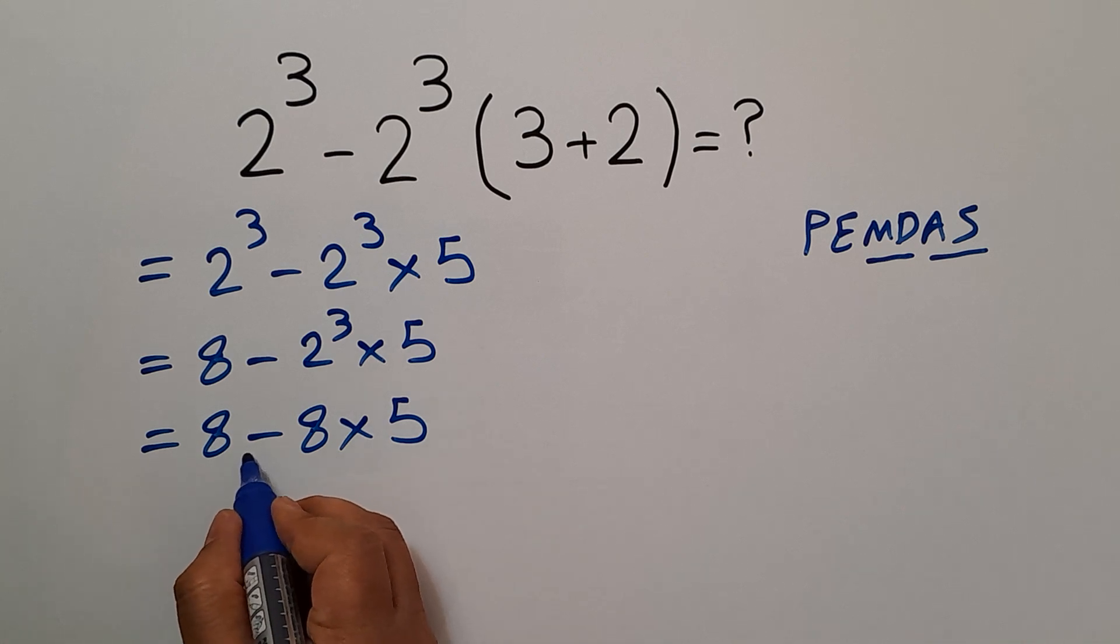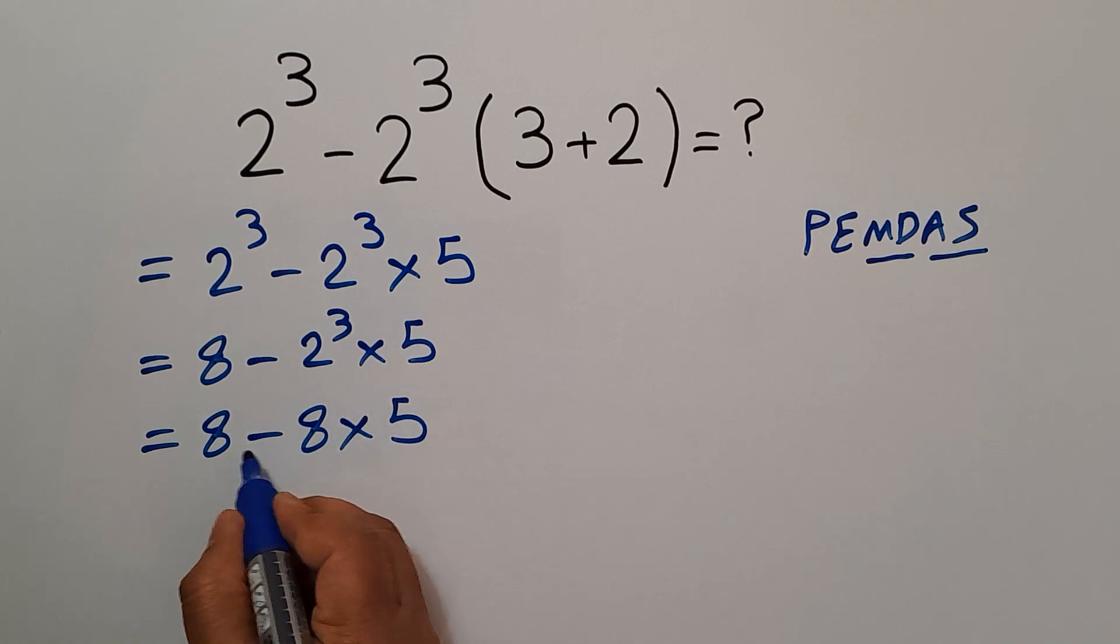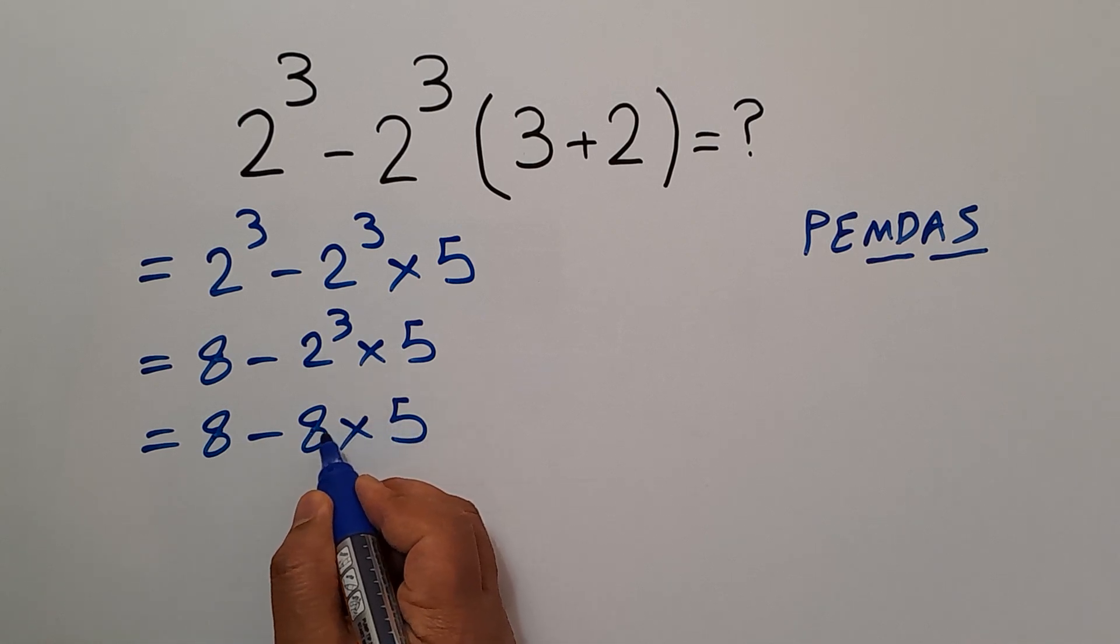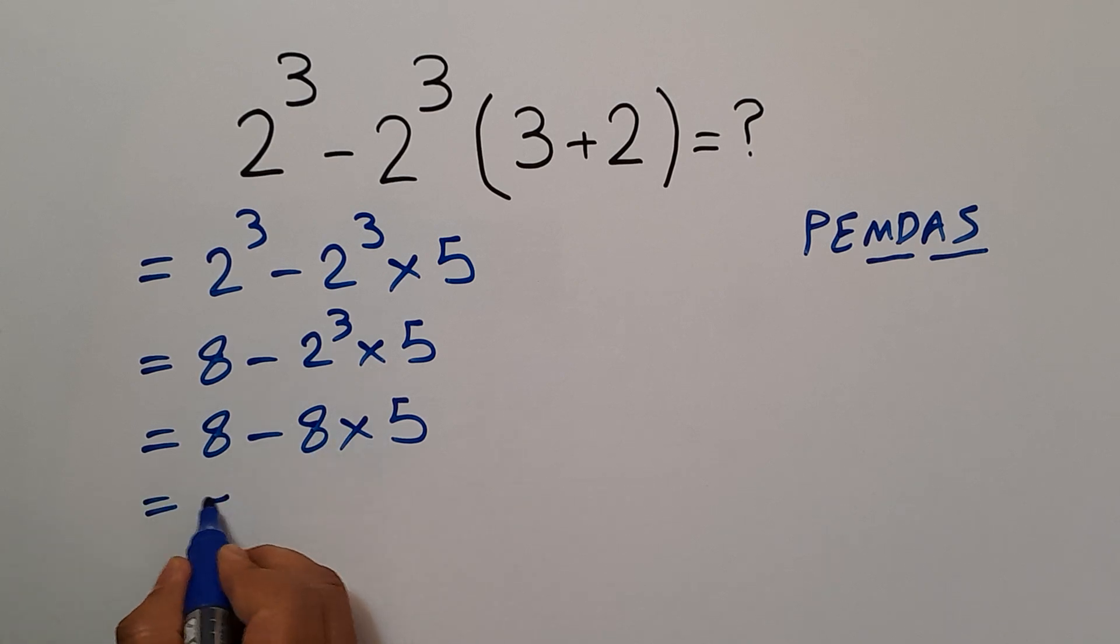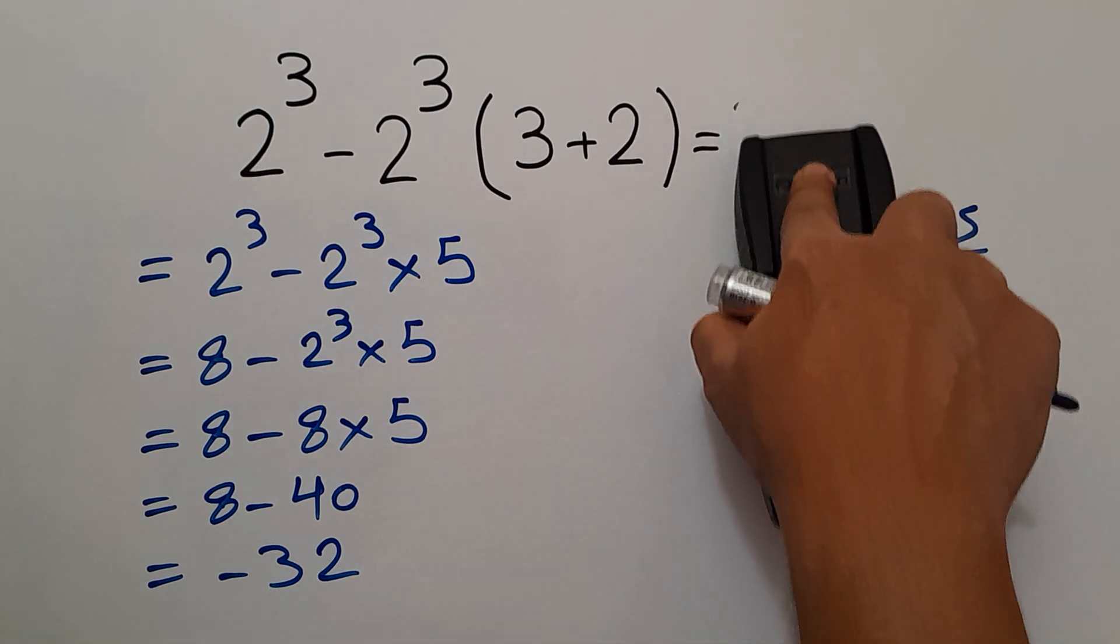Now, we have one subtraction and one multiplication. Remember that multiplication has higher priority than subtraction. So first, we have to handle this multiplication. 8 times 5 gives us 40. So 8 minus 40, which equals negative 32. So our final answer to this problem is negative 32.